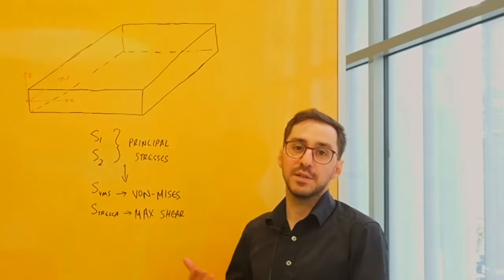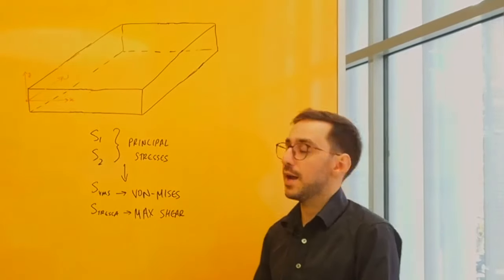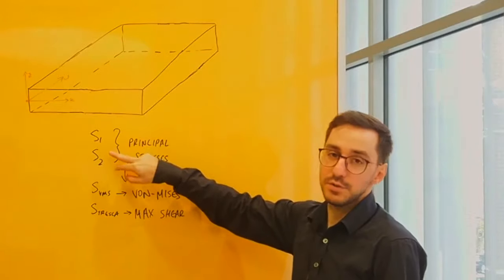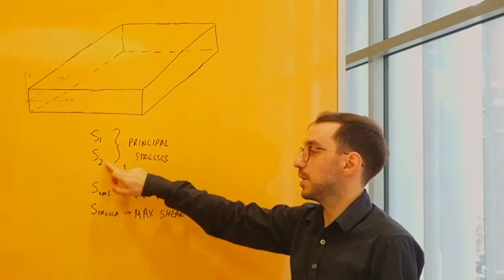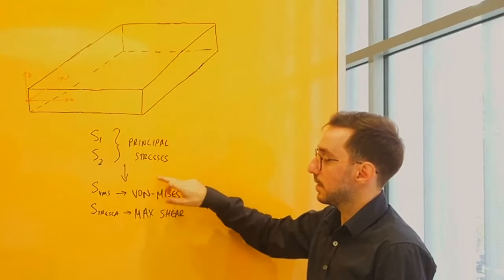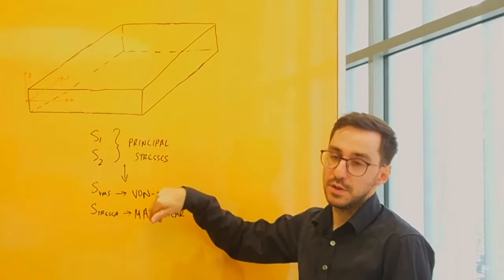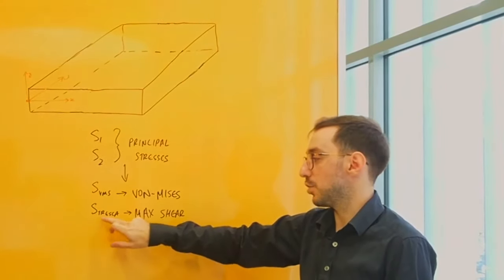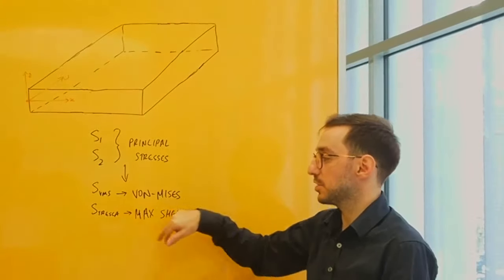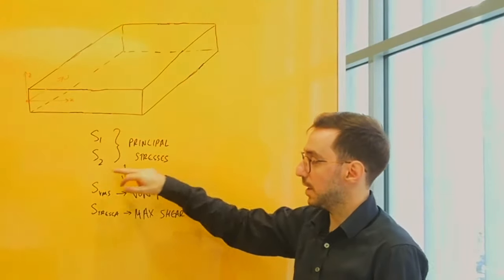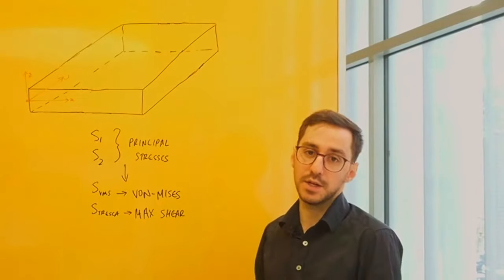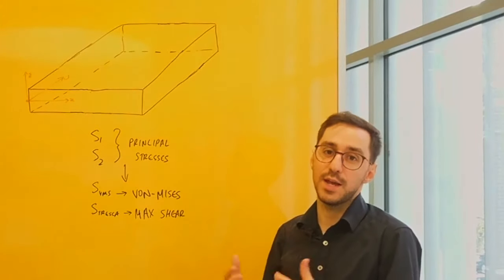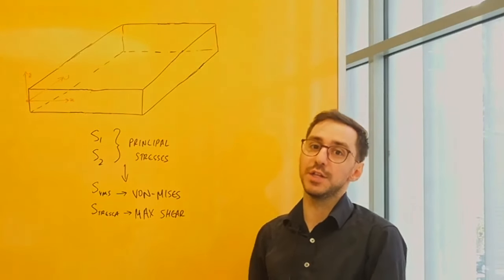Once Sx, Sy, and Sxy are known, we can calculate the principal stresses on the plate — S1, the major principal stress, and S2, the minor principal stress. These principal stresses are then used to calculate the equivalent stresses. The two important equivalent stresses are Von Mises stress and the Tresca shear stress. The Tresca shear stress is the maximum shear stress. Probably the most important equivalent stress that engineers consider is the Von Mises stress, which can be thought of as the worst-case stress result — which is why engineers look at it so much.